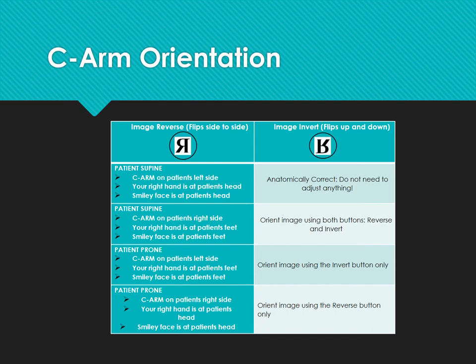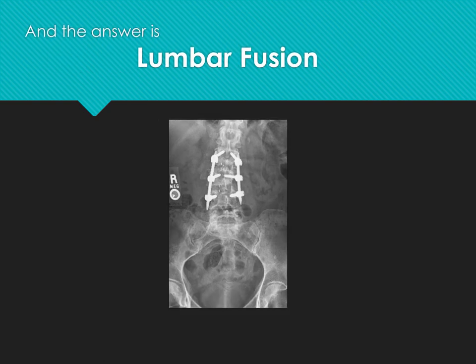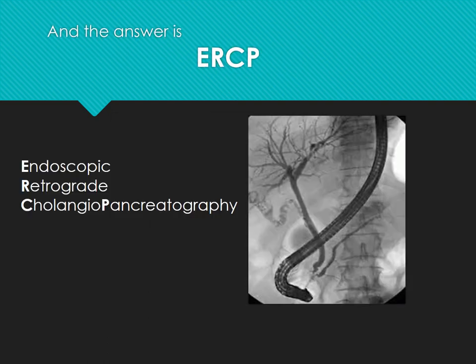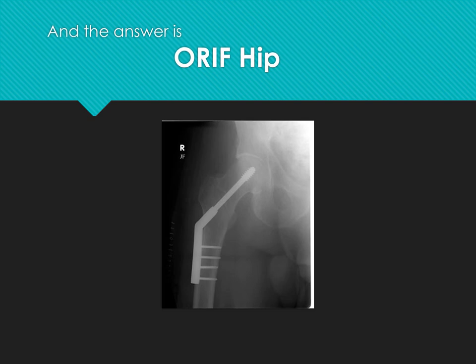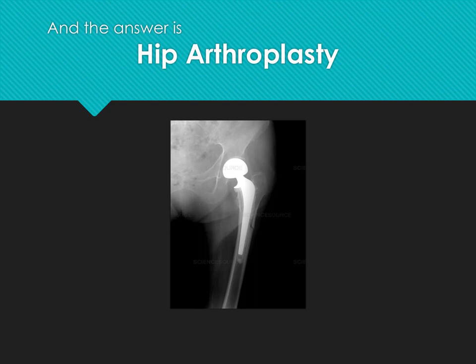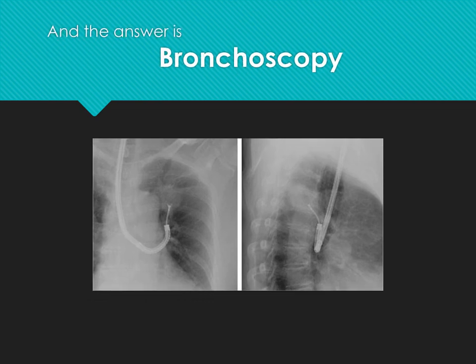C-arm orientation — review and know this chart. Identify this surgery: the answer is lumbar fusion. Identify this surgery: the answer is ERCP. Identify the surgery: the answer is ORIF of the hip. Identify the surgery: the answer is hip arthroplasty. Identify the surgery: the answer is bronchoscopy.